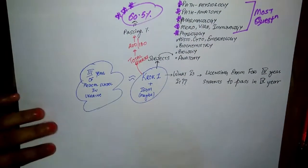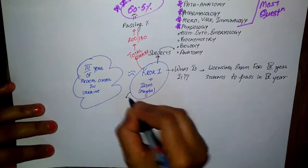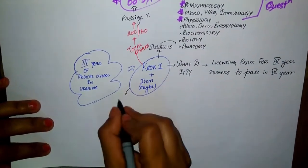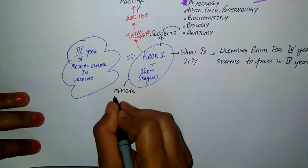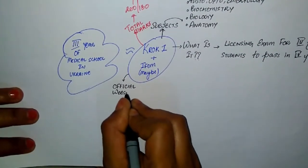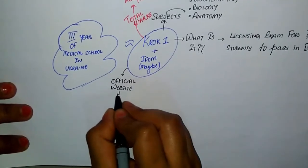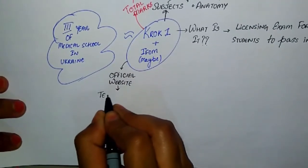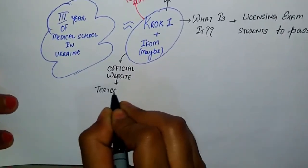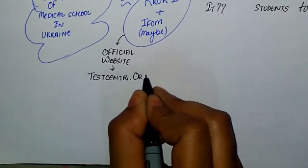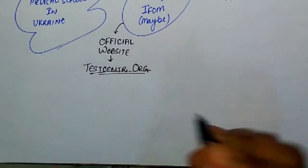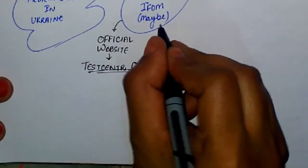When I was in third year in 2019, we got two attempts, and if you don't pass, you have to repeat the year again. I recommend you check all the updates regarding CROC 1 or CROC 2 on the official website testcenter.org. You should always check updates on the official website rather than unreliable sources.